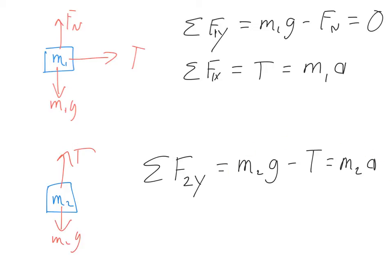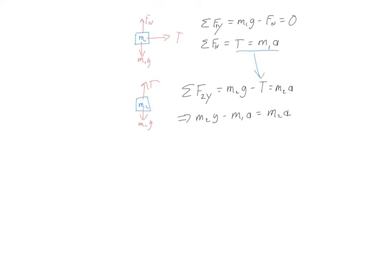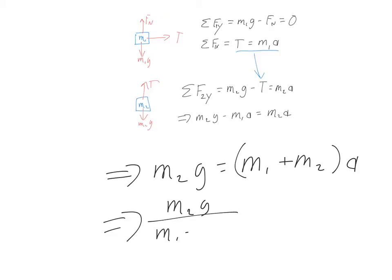So when I do that, I'll have m2g minus m1a equals m2a. Now we just have a few steps of algebra. Give ourselves a little bit of space to complete that algebra work. So when we do that, we're going to see that we have m2g equals m1 plus m2 times a, a little distributive property there. Divide both sides by that sum of masses. So I have m2g divided by m1 plus m2 equaling the acceleration of the body.